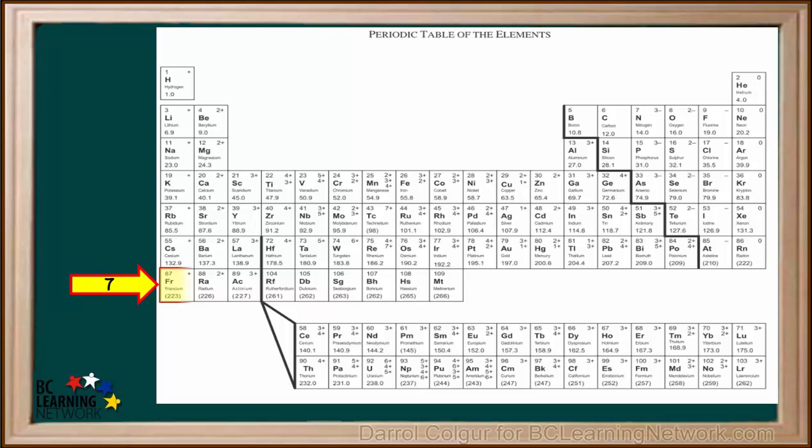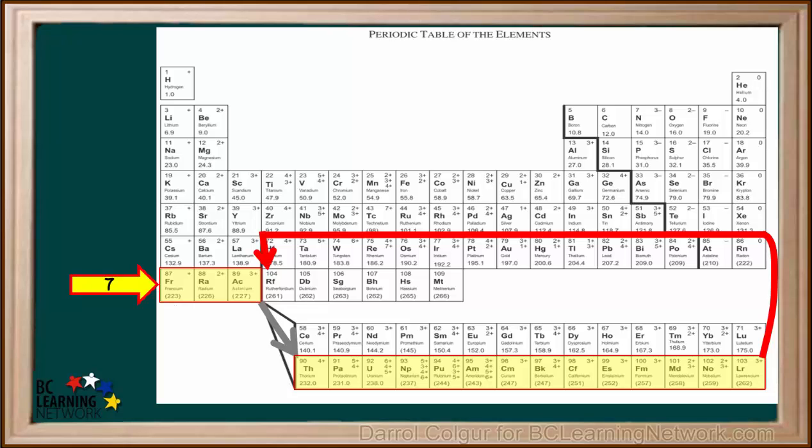Period 7 starts with elements 87 to 89, francium to actinum, and then proceeds down here to element number 90, thorium. It includes all the elements from 90 to 103, thorium to lorencium. Then it proceeds back up here to element 104, rutherfordium, and includes the rest of the elements in this horizontal row, elements 104 to 109, rutherfordium to mitnerium.